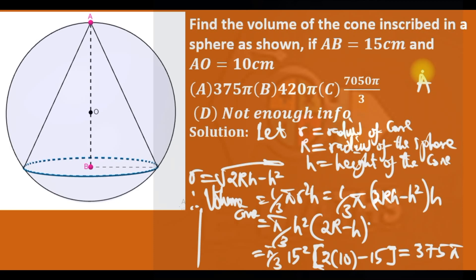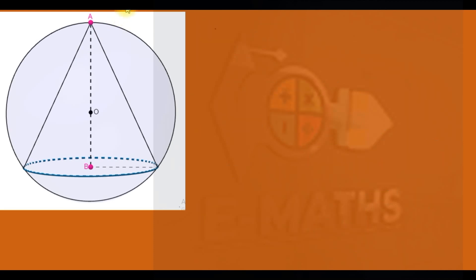Let me now show you how the radius of the cone equals √(2RH − H²). Looking at the same cone diagram, we want to find an expression for the radius of the cone given the radius of the sphere and the height of the cone.